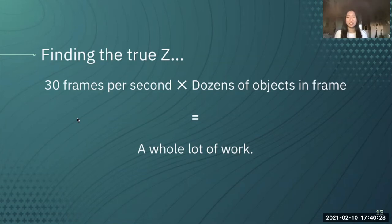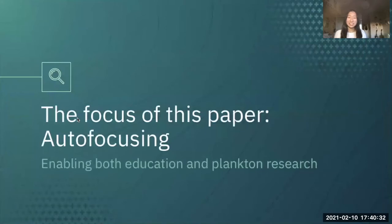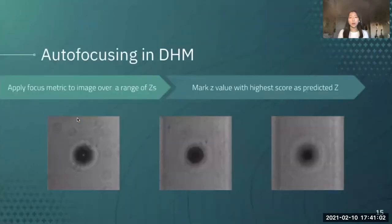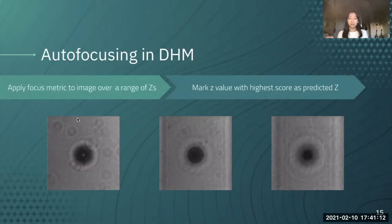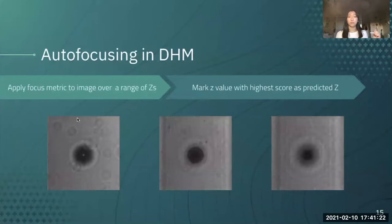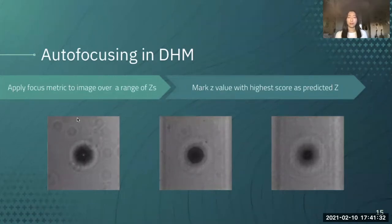And so enter the focus of this paper: autofocusing. Autofocusing in digital holographic microscopy has been studied, and the general workflow is that you apply a focus metric to an image over a range of Zs. Then you mark the Z value with the highest score as our predicted Z. The idea being that a blurry image at a Z too low would not be marked with a very high score, the clear one in the center should get a really high score, and the blurry one on the right should get a pretty low score. We want to see a peak at our true Z, and all other Zs get a low focus score.